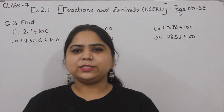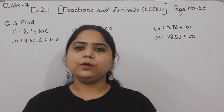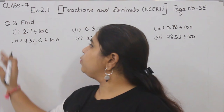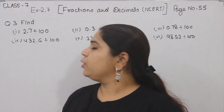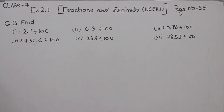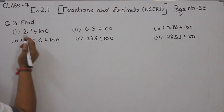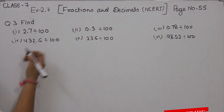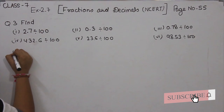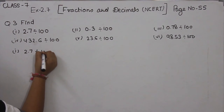Hello everyone, this is Preeti. We are here with another question of fractions and decimals, Exercise 2.7, Question number 3, page number 55. Question number 3, find Part 1: 2.7 divided by 100. We will start with Part 1, 2.7 divided by 100.